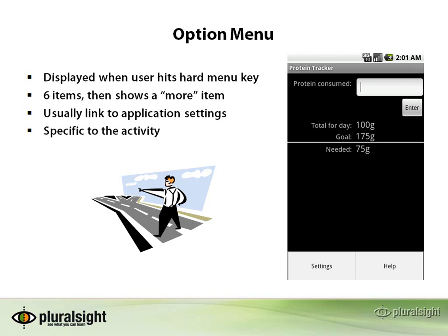One thing to keep in mind with option menus is that in general they're specific to the activity. So if your application has multiple activities, you may want to make the context of the option menu essentially that full activity — that full screen. Those things that show up in that menu should apply to that activity or screen. You're going to want to use one in the case that you have some context that's very specific to an activity or general to your application: settings, help, things like that.